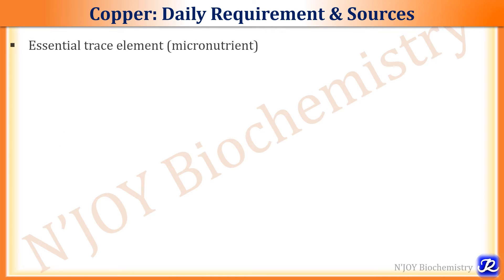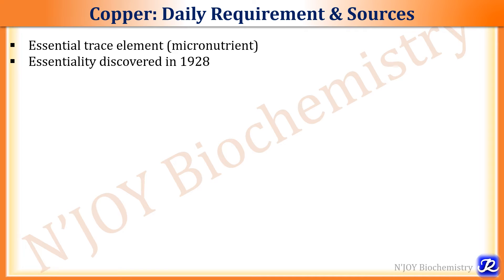Copper is an essential trace element. In humans, copper is essential for the proper functioning of organs and metabolic processes. It is an important constituent of various enzymes and also of various non-enzymatic proteins. Its essentiality was discovered in 1928. Total body copper is about 100 mg and is mostly distributed in liver, brain, kidneys, heart, bone, muscle, and hair.